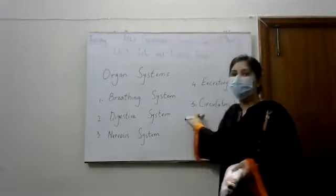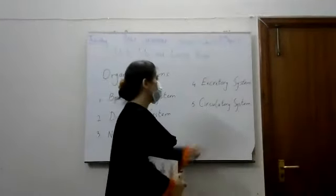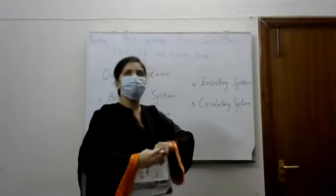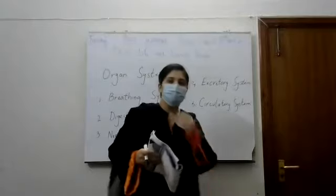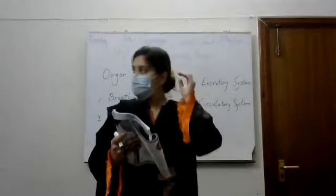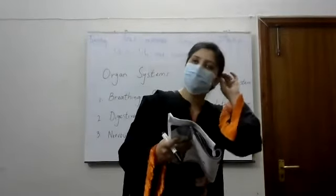Fifth one is the circulatory system. Circulatory system means circulation. Circulation means circulation of blood in the bloodstream. It is carried out by the heart and the blood vessels. Circulatory system carries substances to all parts of the body.